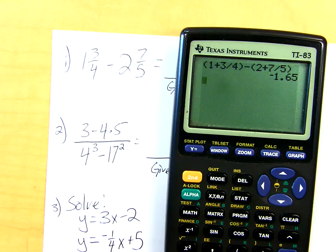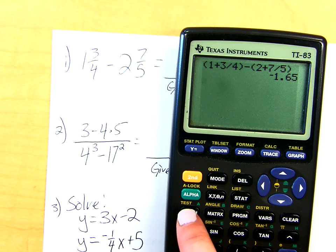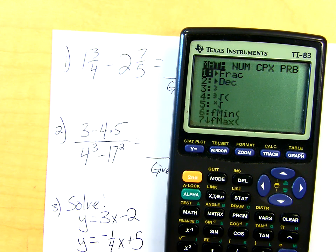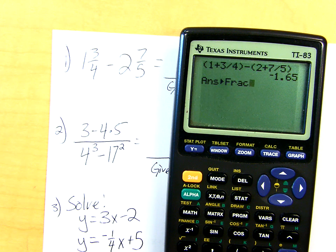Who remembers how to change a decimal into a fraction? Grace, tell me. Math key. You hit math, the math key, and then number 1. And then you just hit enter, and that will change any decimal answer into a fraction in simplest form.